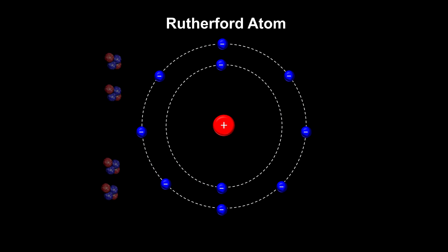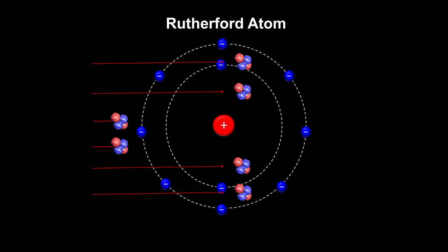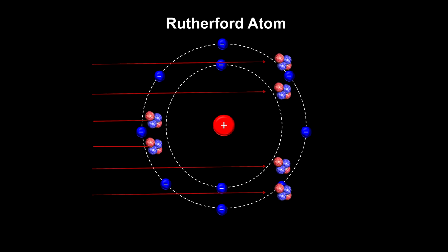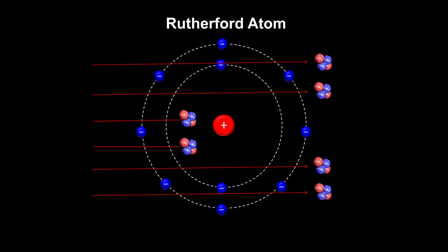To explain these results, Rutherford was forced to picture an atom as being composed of a tiny nucleus where the positive charge and nearly all of its mass are concentrated, with electrons some distance away.